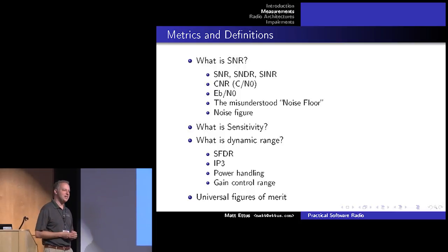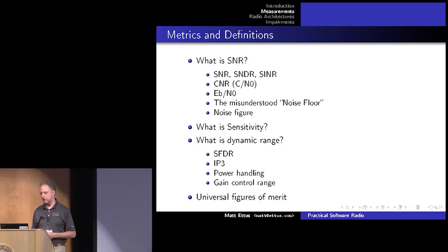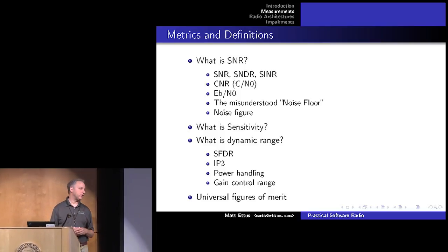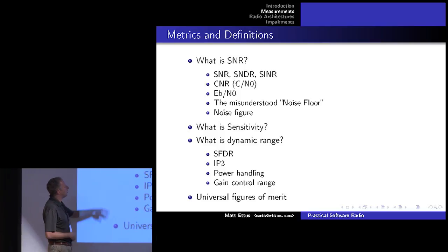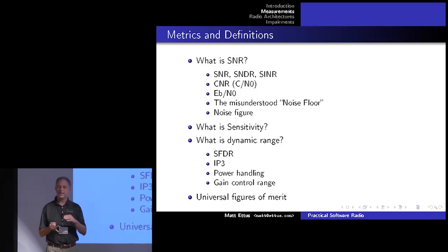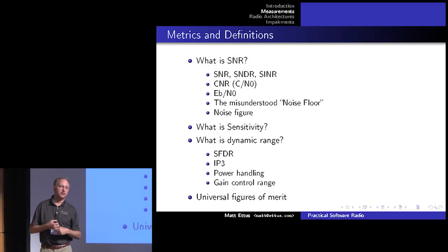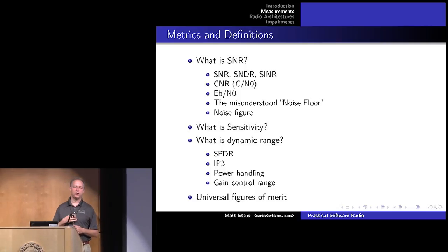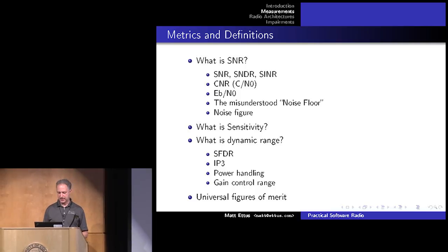So anyone can sort of play with those numbers. But we try to give very straightforward universal figures of merit. So when someone asks us about dynamic range or sensitivity, we answer in terms of noise figure and IP3. And IP3 is sort of the dynamic behavior of the radio in the presence of strong signals. And so I'm gonna get a little bit more into IP3 and dynamic range in a little bit.